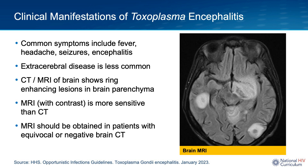On imaging, a CT or an MRI will show ring-enhancing lesions in the brain parenchyma. However, an MRI is far more sensitive than a CT scan. So if you have a high clinical suspicion for toxoencephalitis and the head CT is equivocal or negative, you must obtain an MRI. The image on this slide is an MRI brain with contrast of a patient with advanced HIV who had toxoencephalitis, and as you can see, there are classic donut-like ring-enhancing lesions in the brain parenchyma.